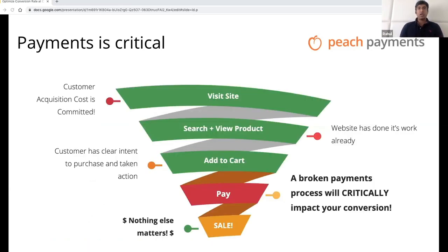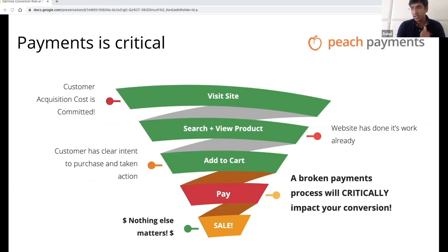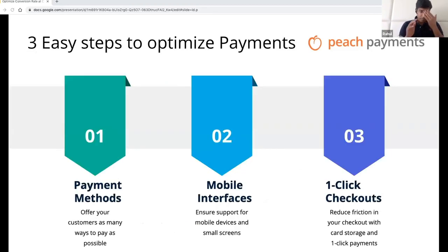Now, let's say you got search to work. Coming back to the funnel, what can really make or break your conversion rate is your payments process. Assuming your website does the work — search is working well, you've managed to cross-sell and upsell — if the customer can't pay you, it doesn't matter. We're a payment service provider, so what have we seen are the three easiest things a business can think about in terms of improving conversion?